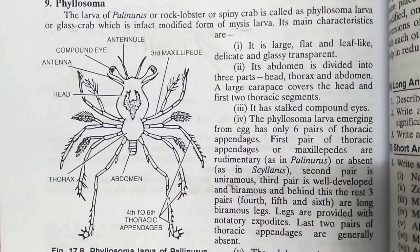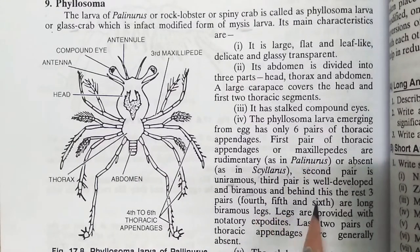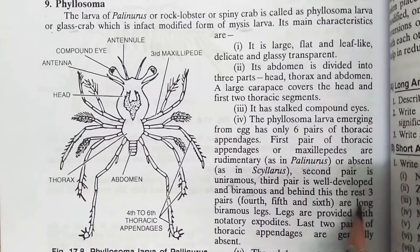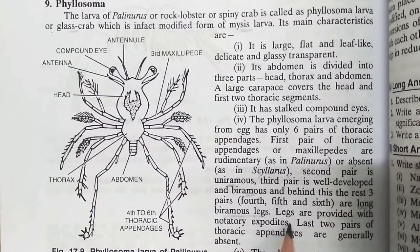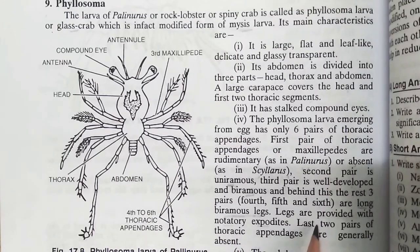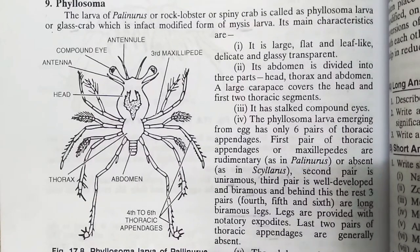The 4th, 5th, and 6th pairs of thoracic appendages are long — these legs are natatory. The last two pairs of thoracic appendages are generally absent.